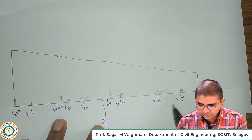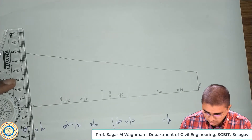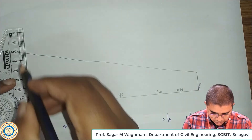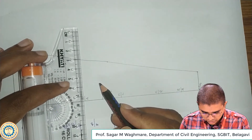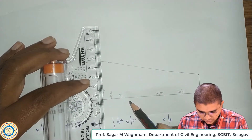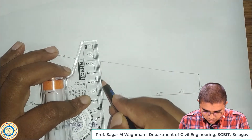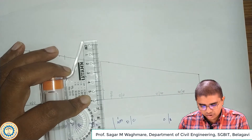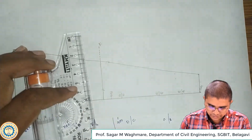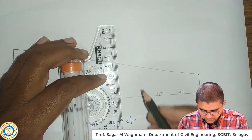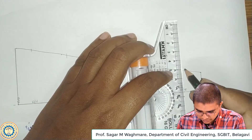Once I draw the profile, the next task we will be performing is transferring the bedding planes on the top. I will be just marking this bedding plane, then this bedding plane, then again this bedding plane. Then here this is the fault line — what I will draw is I will just draw a horizontal line here, extend it in a dotted form, and write down here as F. Then I will transfer the remaining bedding planes.